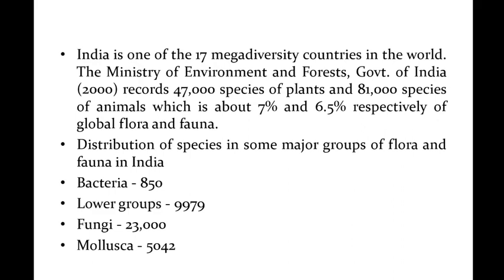There are roughly 17 mega diversity nations: Australia, Brazil, China, Colombia, UK, United States, Philippines, India, Indonesia, Madagascar, Malaysia, Mexico, New Guinea, Peru, and the Democratic Republic of Congo.